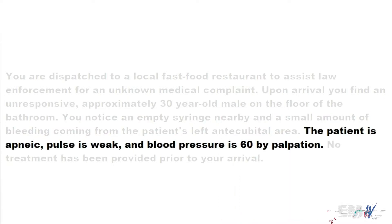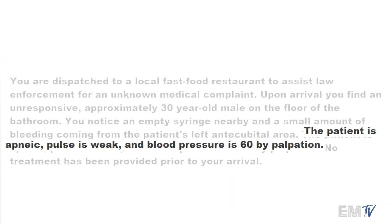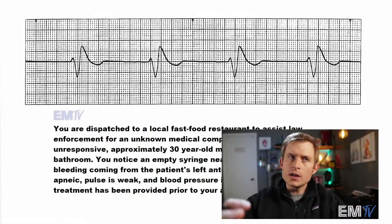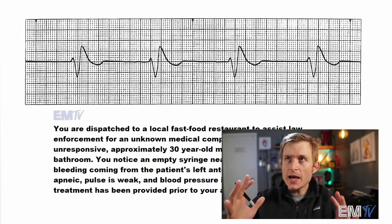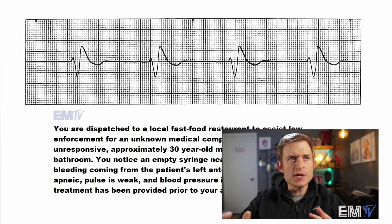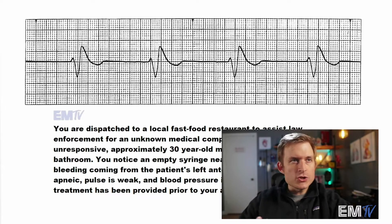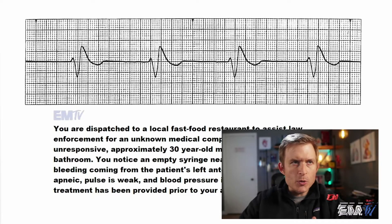The patient is apneic, so not breathing. Pulse is weak, and I'm getting a blood pressure of 60 by palpation. Now in Static Cardiology, part of the points come from adequately treating this patient's cardiac rhythm — it's not just about identification. The treatment algorithm we choose is based on whether or not we determine the patient is unstable.